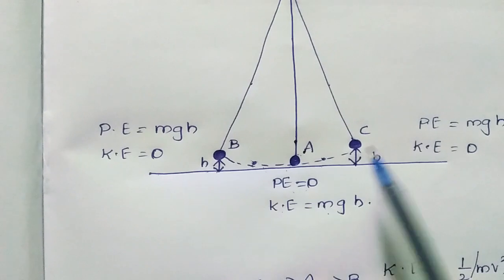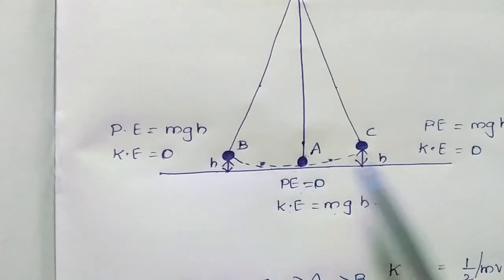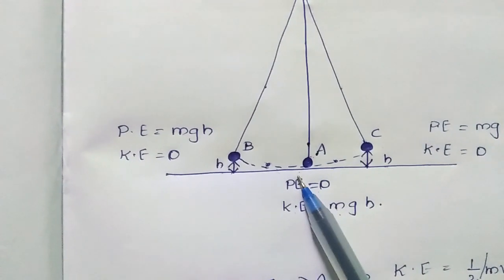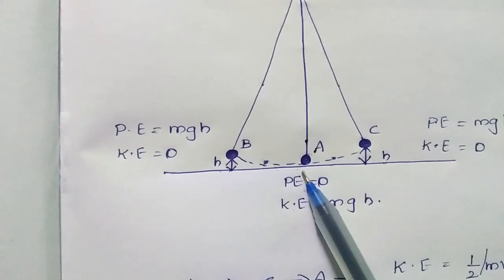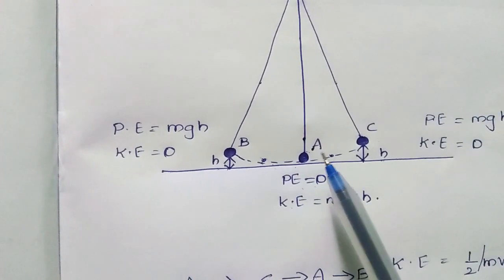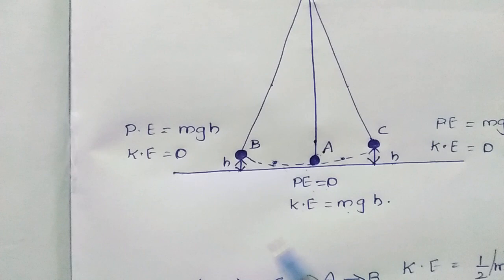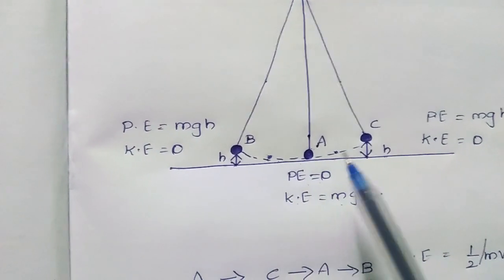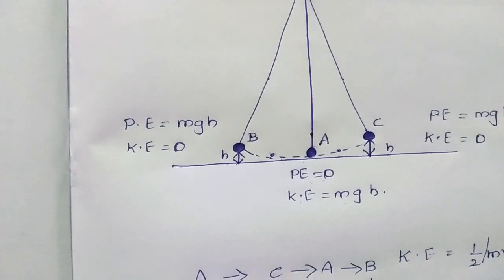From C to A it again swings. While coming from C to A, it is because of the force of gravity. And it should go from A to B. What makes it go from A to B? Let's understand with a mathematical expression.